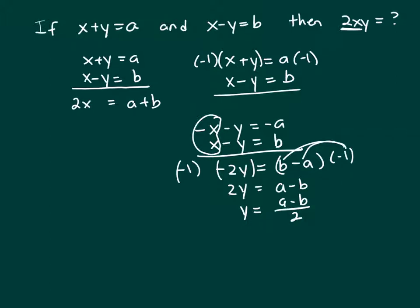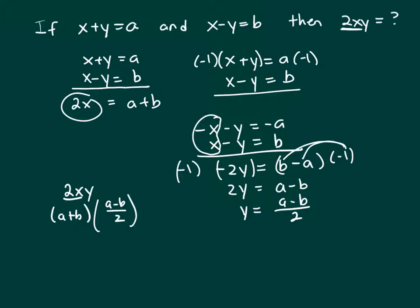Remember, we're trying to find 2xy. We know what 2x is — 2x is a plus b — and then we want to multiply that by y. We just found y to be a minus b over 2. But if you look at your answers, you don't see that form. So this is a plus b over 1, times a minus b — let me write it like this: a plus b times a minus b, over 2.